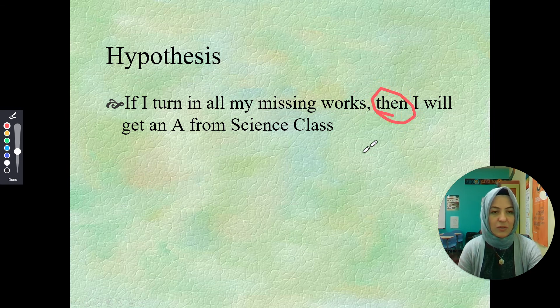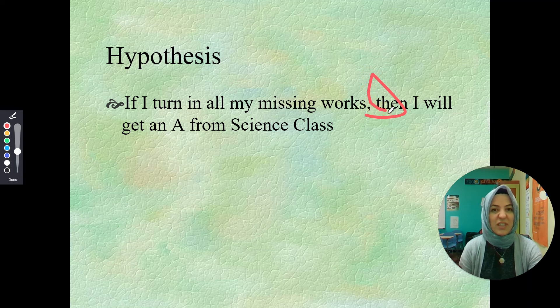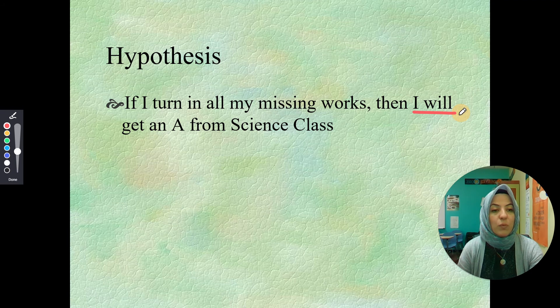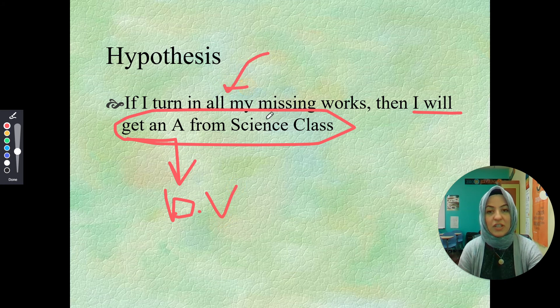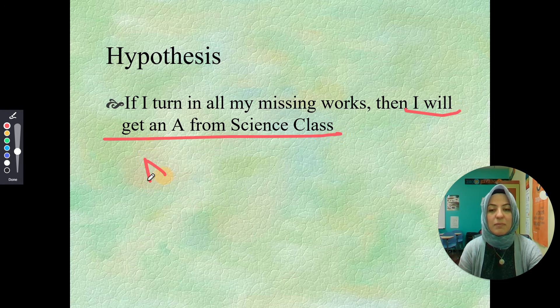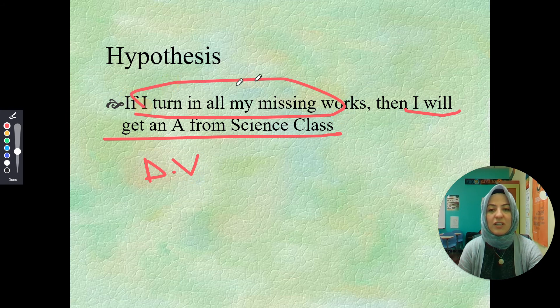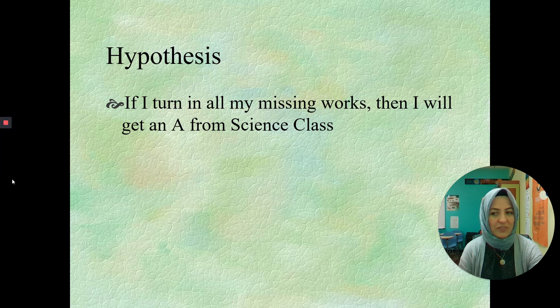Then, after the word then, I have something that is happening. After the word then, right here. Something's, well, what a circle. Way to go, Ms. Coach. I will get an A from science class. So this is something dependent on, dependent variable, depending on turning in the missing works. So the second part is dependent variable. Variable, the first part, first part, is the independent variable. Cool? Good.